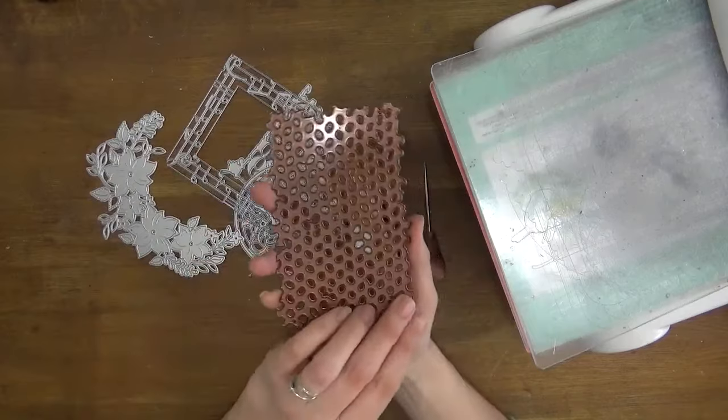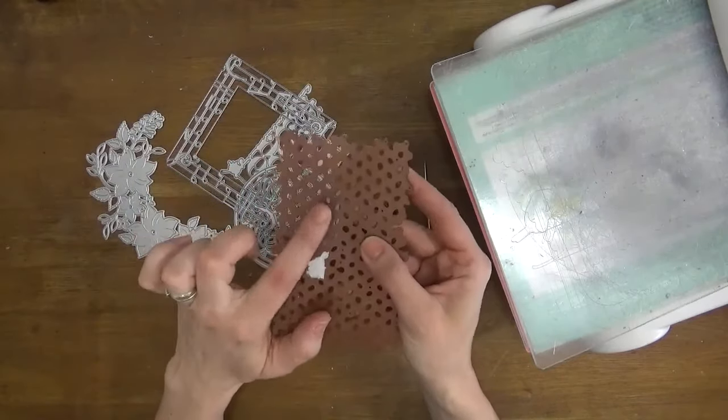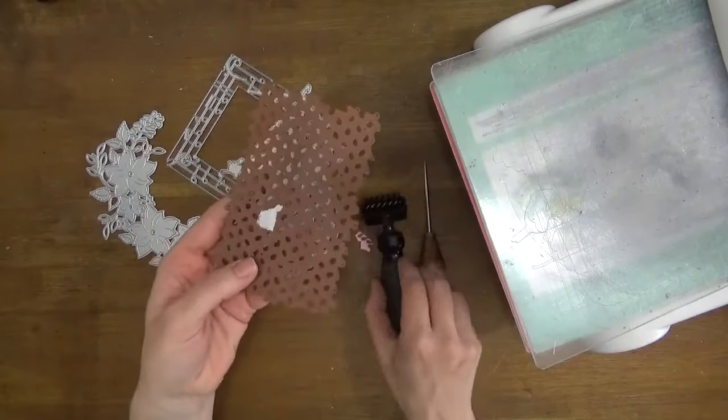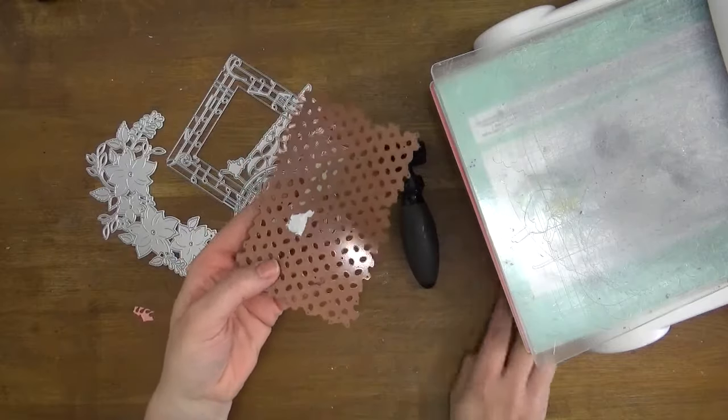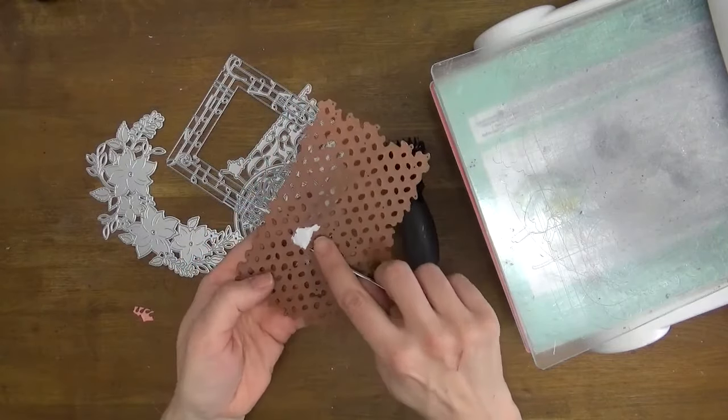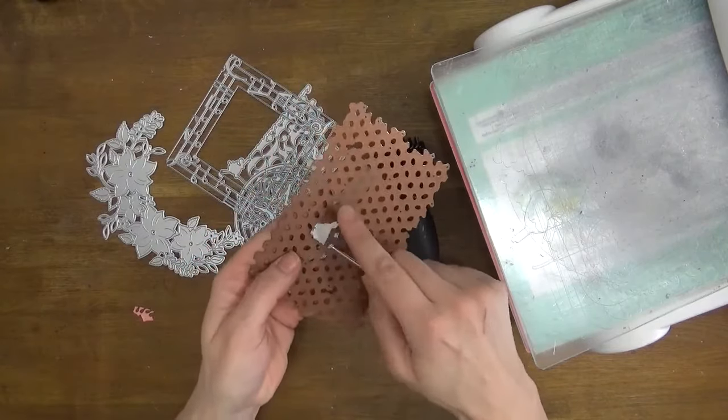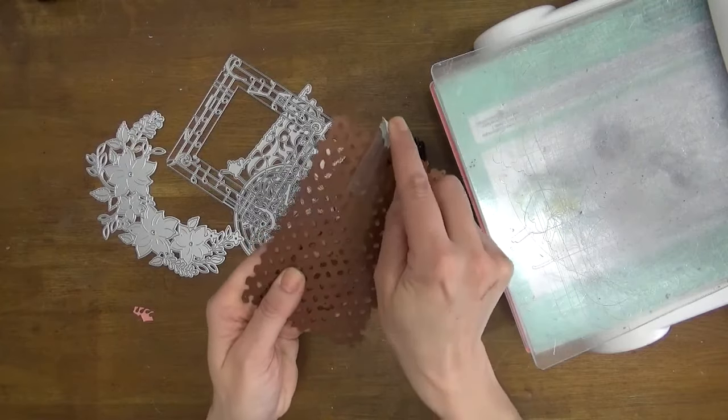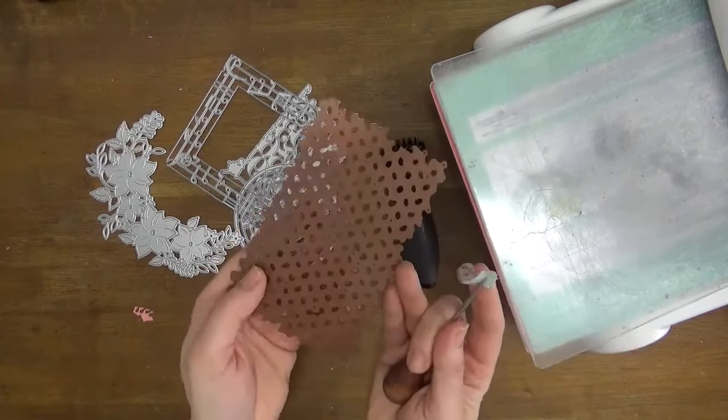As well as that, if you're using new dies, you'll often find there's some tape on the back, and this is going to prevent you from being able to get even pressure throughout your die cutting. Always make sure you remove any sticky tape that's on the back of your die before you do your die cuts.